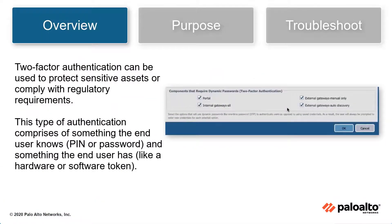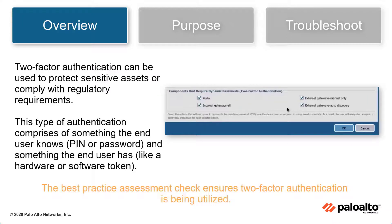Two-factor authentication can be used to protect sensitive assets or comply with regulatory requirements. This type of authentication comprises of something the end user knows, like a PIN or password, and something the end user has, like a hardware or software token, one-time password, or smart token.